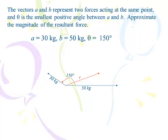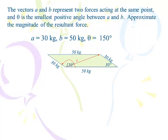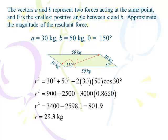Same setup: two forces of 30 kilograms and 50 kilograms with 150 degrees between them. The resultant is across from the supplementary angle: 180 minus 150 equals 30 degrees. Using the law of cosines: R² = 30² + 50² − 2(30)(50)cos(30°), giving a resultant of approximately 28.3 kilograms. Note that you will almost always use the supplementary angle — not the given angle — in the equation.